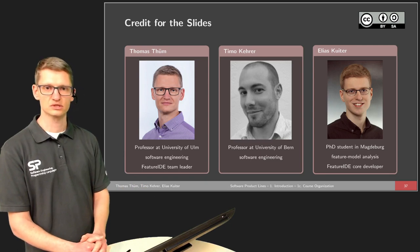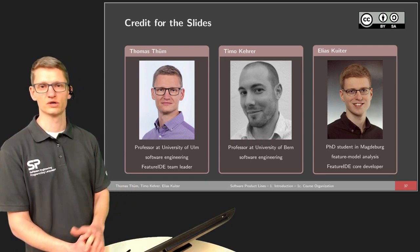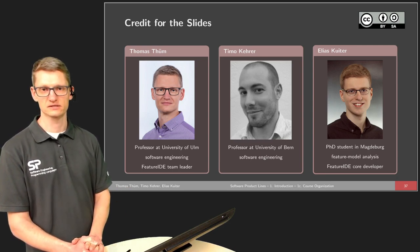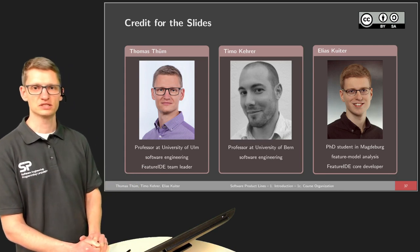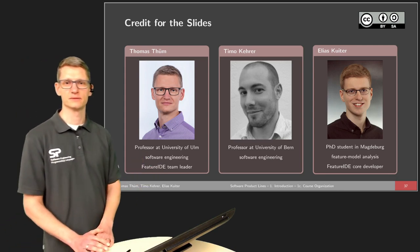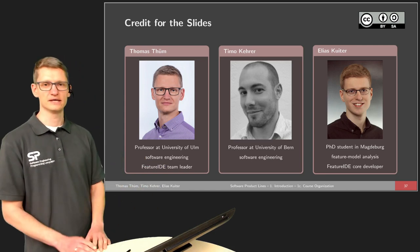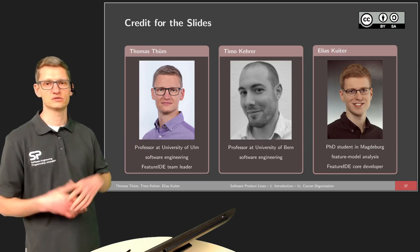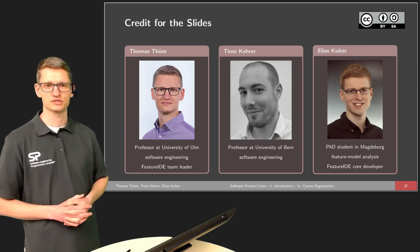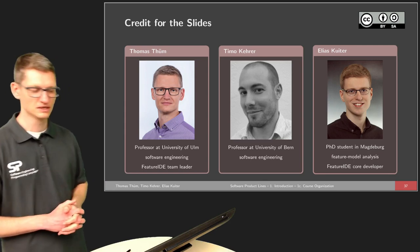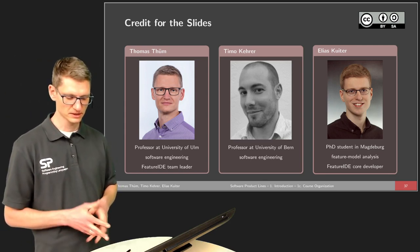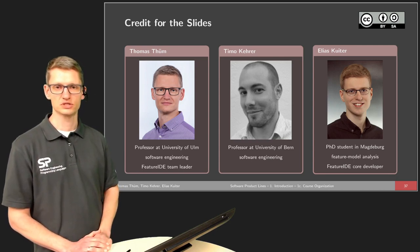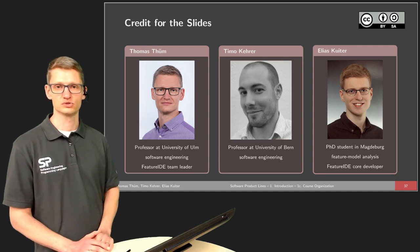Elias Küter is a PhD student in Magdeburg, and he is working on one of the core topics of product lines, in particular on feature model analysis. So we'll talk about this later on in more detail, but I've already shown you some plots that he created. Actually, he created the data for this, where we looked at how many features are in Linux, how many products are there. And if you have questions on this, Elias will be one of the persons to ask about this topic. And Elias and I are also collaborating in the FeatureIDE team together with others on building tool support for product lines.